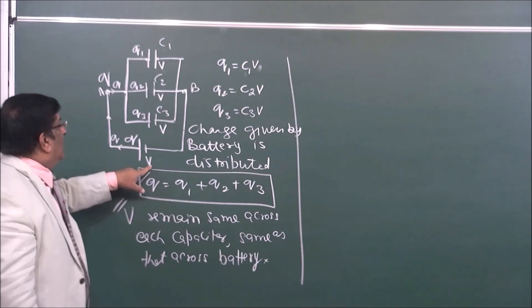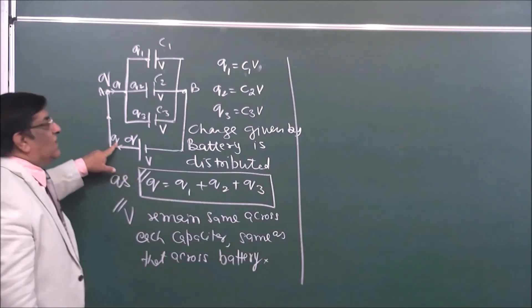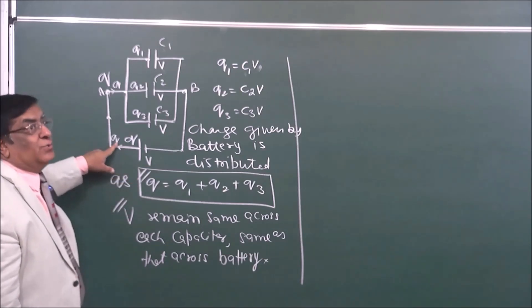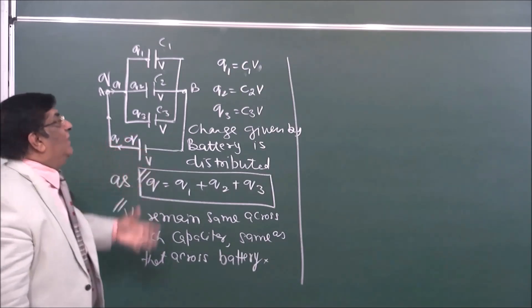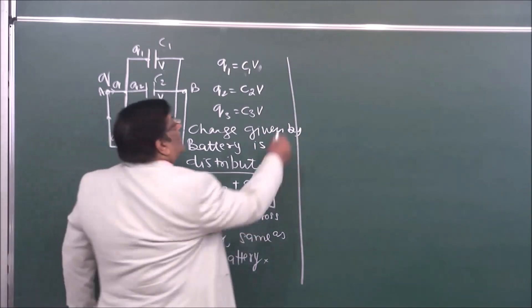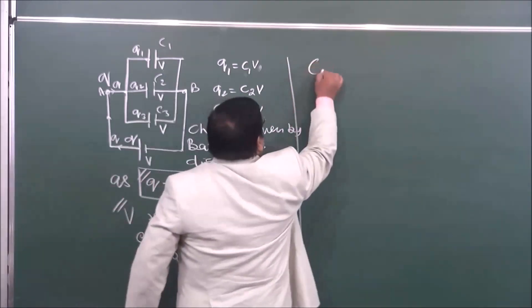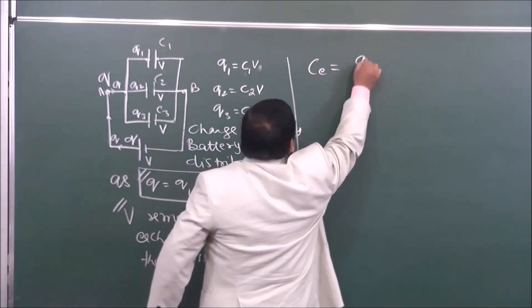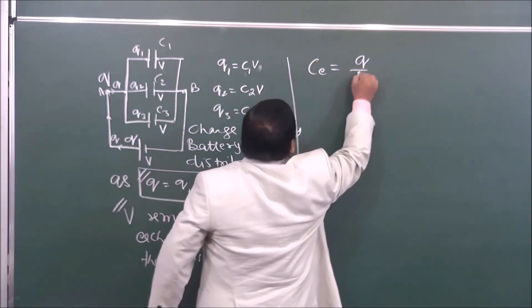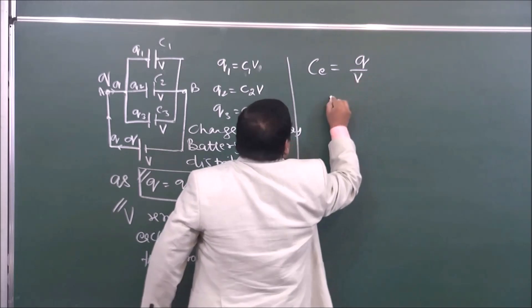An equivalent capacitor should carry the same total charge and same energy. The potential of that equivalent capacitor will be V, the charge will be Q, and therefore its capacitance will be equal to Q divided by V.